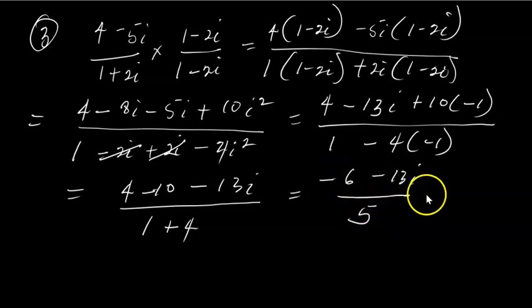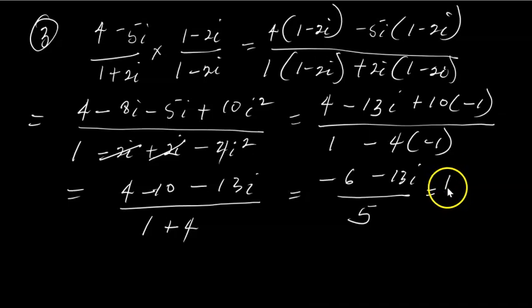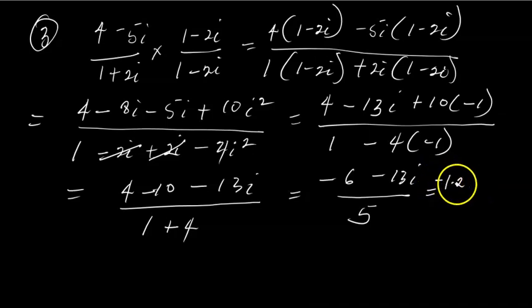So the result is (-6 - 13i) / 5. We can divide this with our calculator: -6/5 = -1.2, and -13/5 = -2.6. So the answer is -1.2 - 2.6i. Use your calculator to check that.